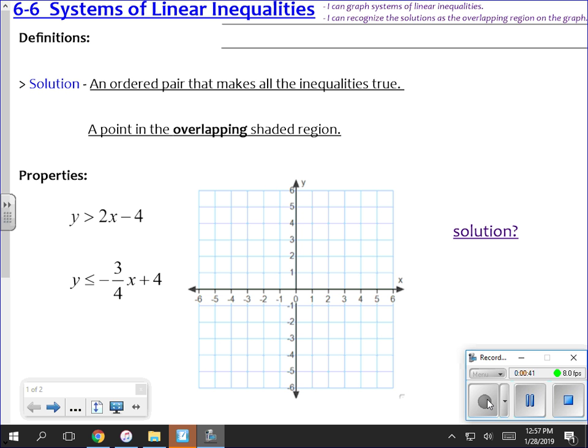You graph one inequality, graph the line, shade one side or the other. Graph the second one, shade one side or the other. Where the two overlap, that's your solution area. You can't solve it algebraically. There is no algebraic solution. You have to solve it graphically.